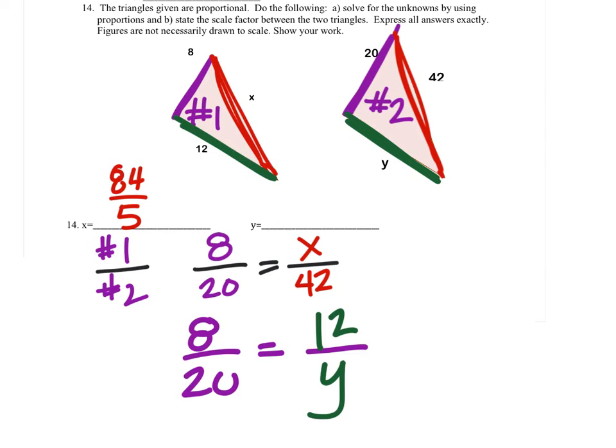When I solve for y, I do 12 times 20 divided by 8, which is just the fishy method. This gives me exactly 30.